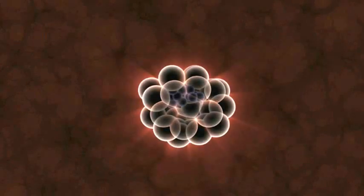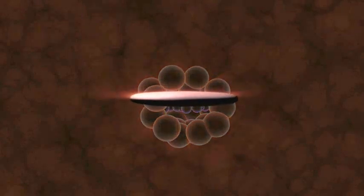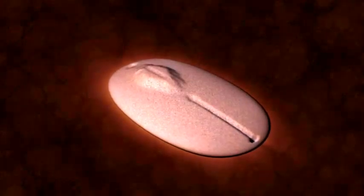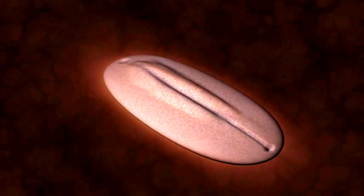Now we see the inner cell mass form into a disc. And at 14 days, we can see the primitive streak form which establishes the line of bilateral symmetry. Then the cells in the disc migrate as development continues.